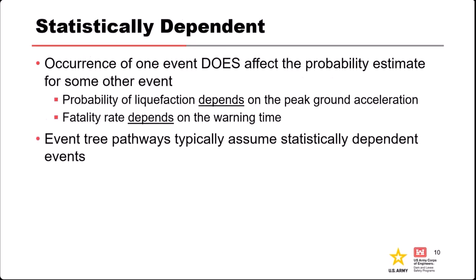Events are statistically dependent when the occurrence of one event does affect the probability of another event. For example, the probability of liquefaction of an embankment probably depends on how large the earthquake was — the peak ground acceleration. Another example: the fatality rate for a population exposed to a breach will depend on a number of factors, one of which is warning time — whether they got enough warning to evacuate. In risk models, we commonly assume each event is dependent on the events that precede it.